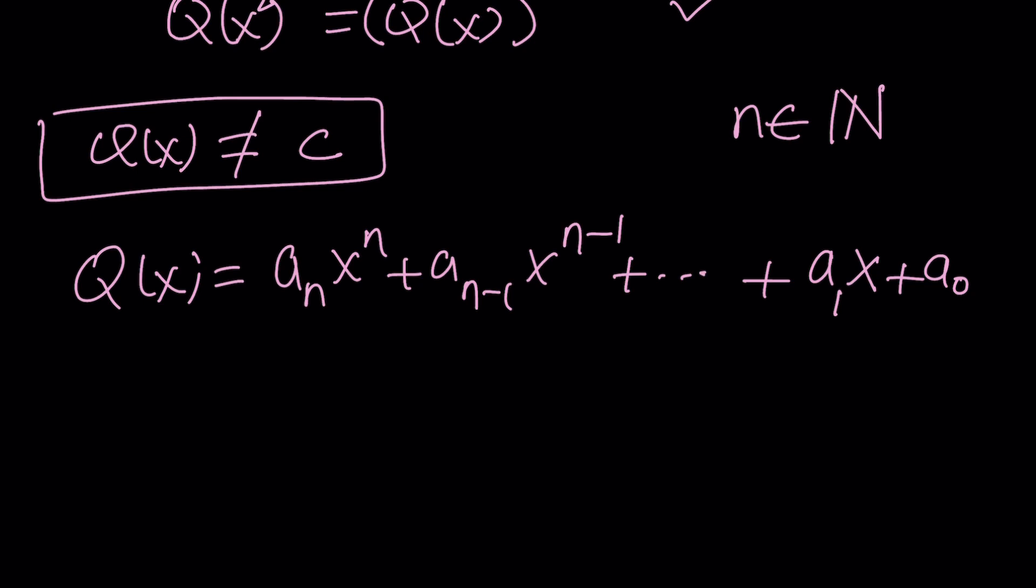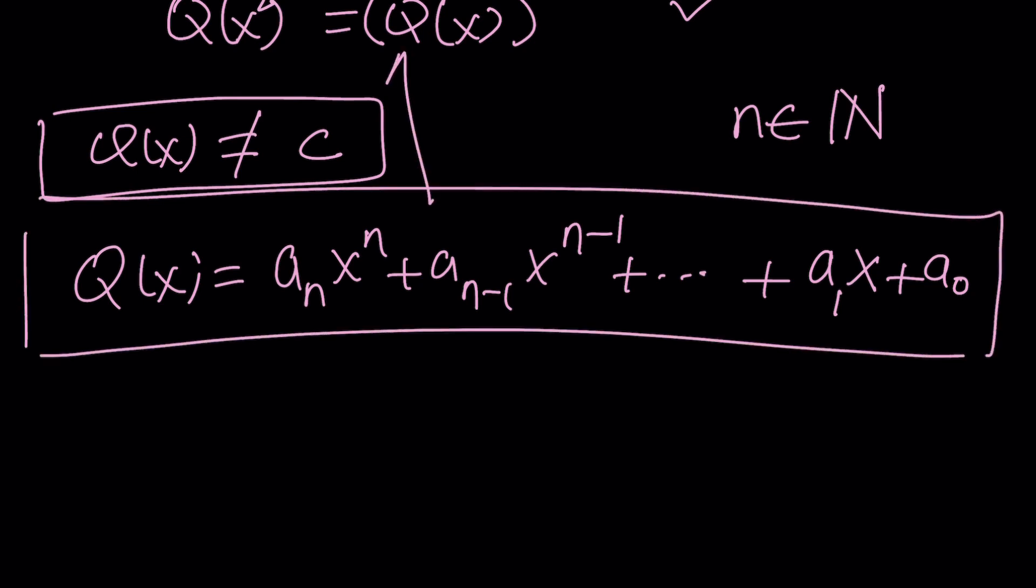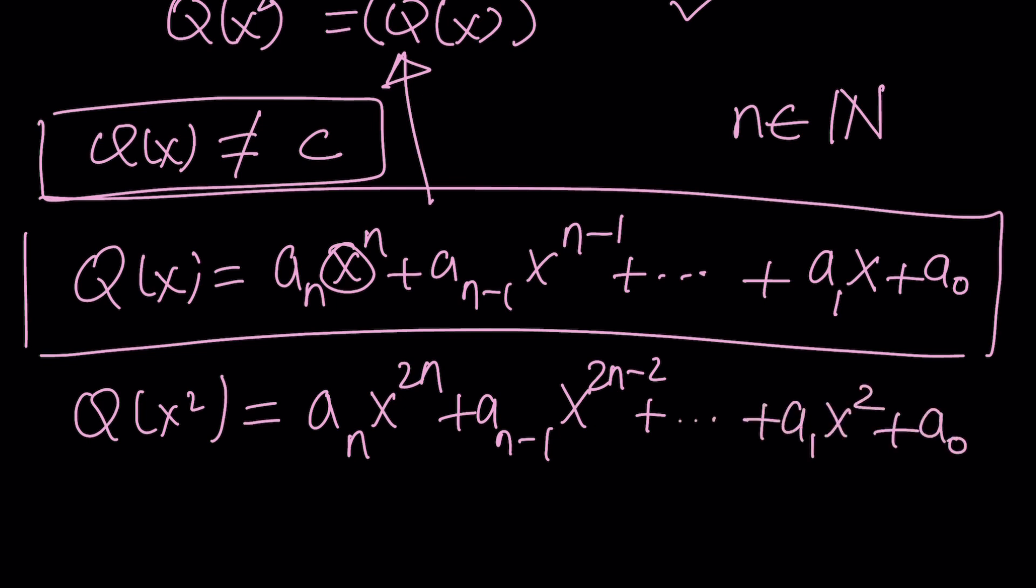So you can go ahead and plug this whole thing. Obviously, that's going to be super long, but you can do that. In other words, if I replace x with x², I'm going to get Q(x²). It's going to give me a_n, and replace x with x², you're going to get x^(2n). And then the coefficients are going to be unchanged, but everything is going to be doubled. And of course, you're only going to have even coefficients. You're not going to have any odd powers. Coefficients are unchanged. The powers are all even.